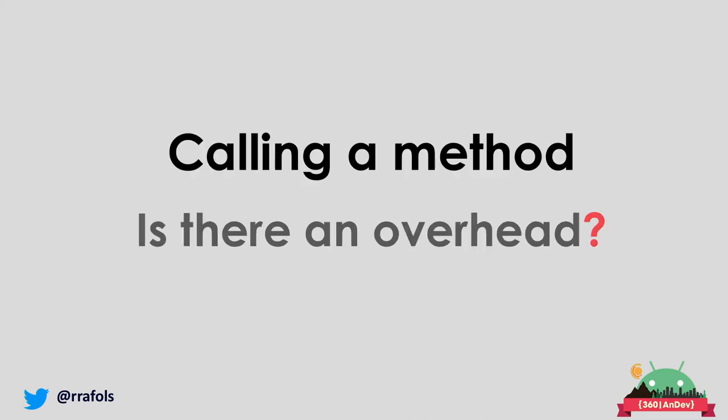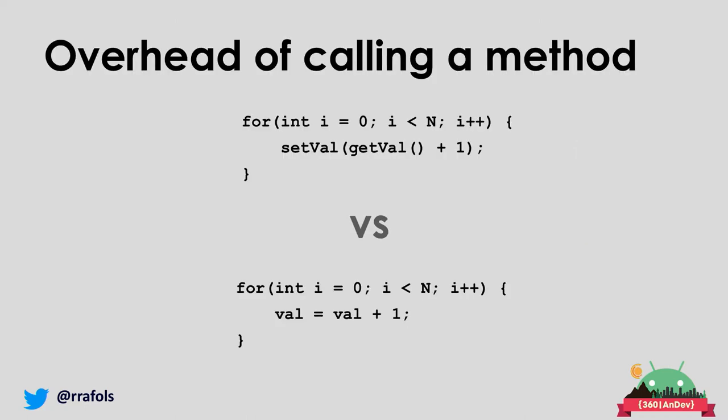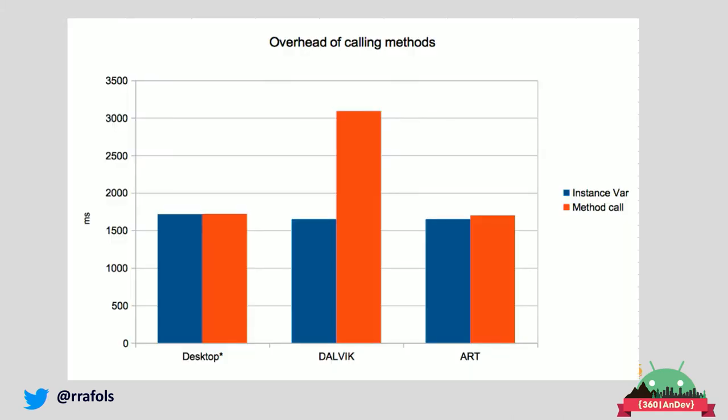Someone once asked me: is there any penalty for calling a method? Let's do a quick test — for example, just incrementing a plus one versus calling a setter and getter. The final answer: there's no penalty in most cases. On desktop the difference is essentially zero, but on Dalvik there is a noticeable penalty.